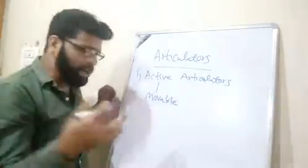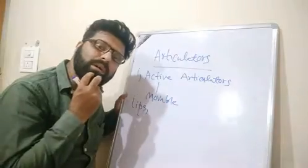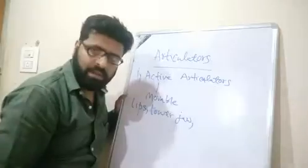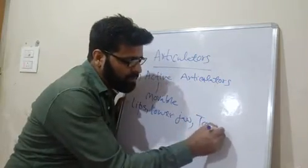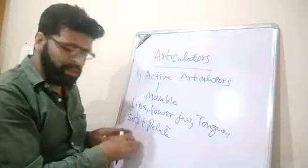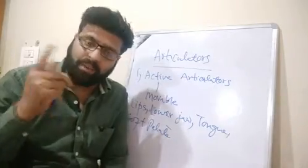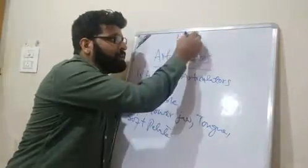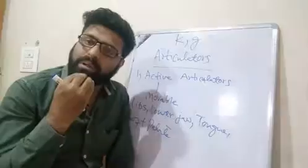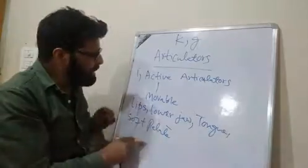What parts of our mouth are active articulators? The lips are active articulators. The lower jaw is an active articulator. The tongue is an active articulator. Also, when we produce the sounds 'kuh' or 'gah', the velum — the soft palate — comes down and touches the back of the tongue. So the soft palate is also movable, making it an active articulator.